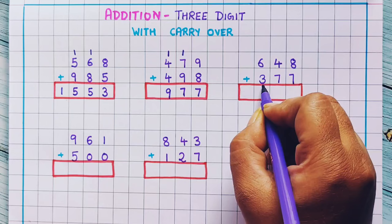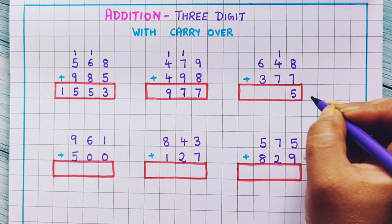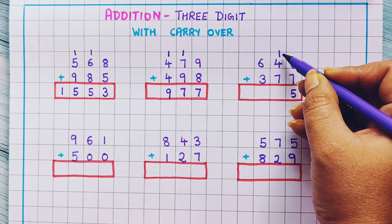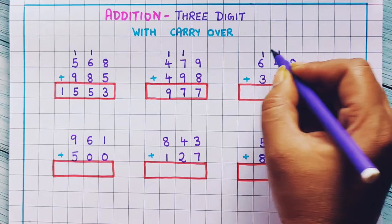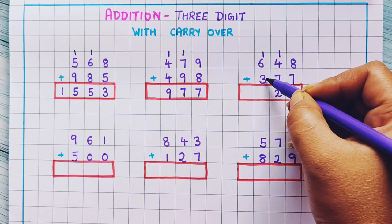Now let's do the next problem: 648 plus 377. Now 8 plus 7 is 15, so I will write 1 here as carryover and 5 here. Now 1 plus 4 plus 7: 7 plus 1 is 8, and 8 plus 4 is 12. So I will put 1 here and 2 here. Now 1 plus 6 plus 3: 6 plus 1 is 7, and 7 plus 3 is 10. So the answer is 1025.